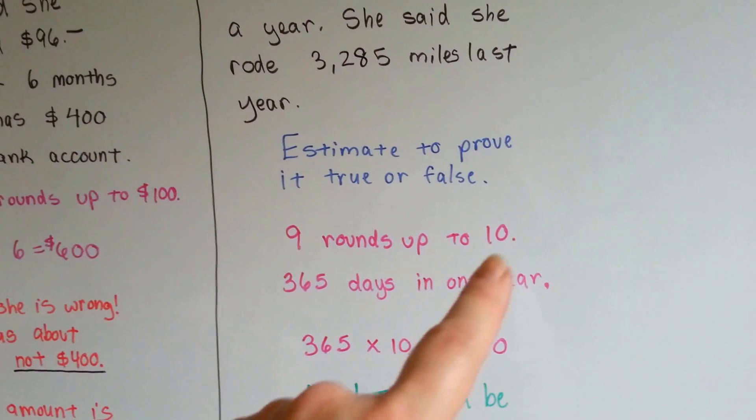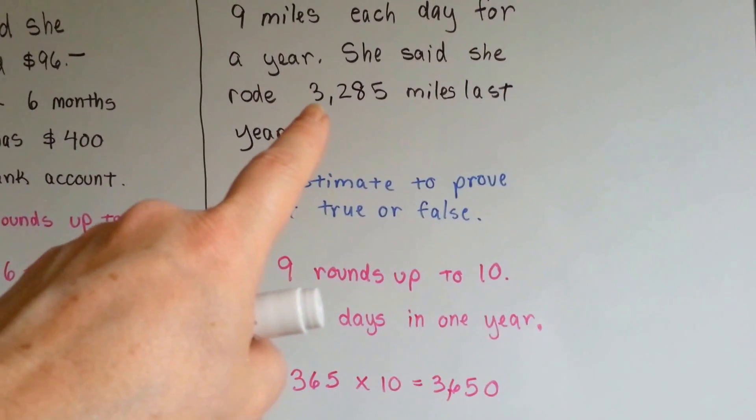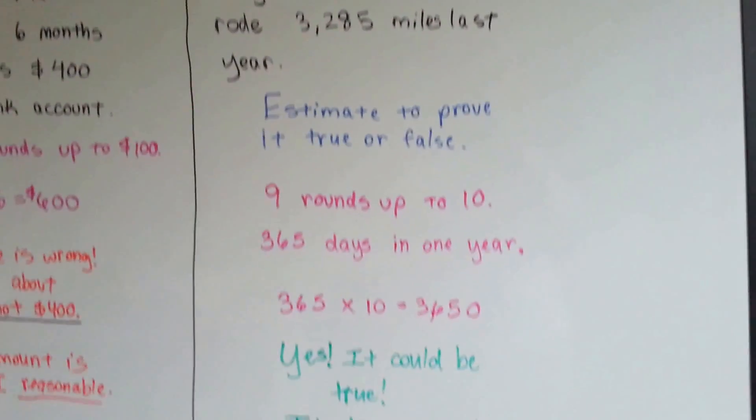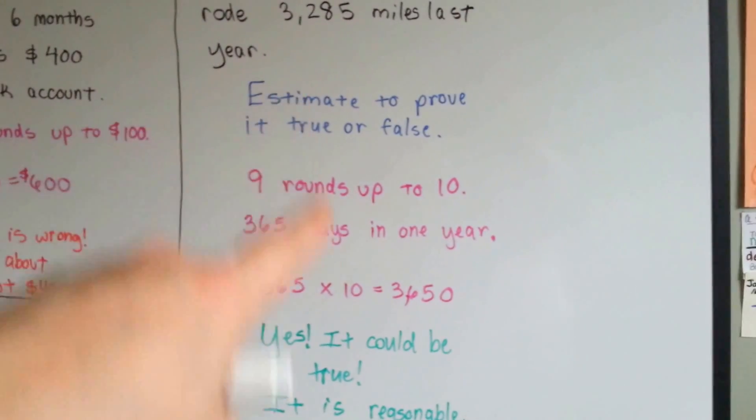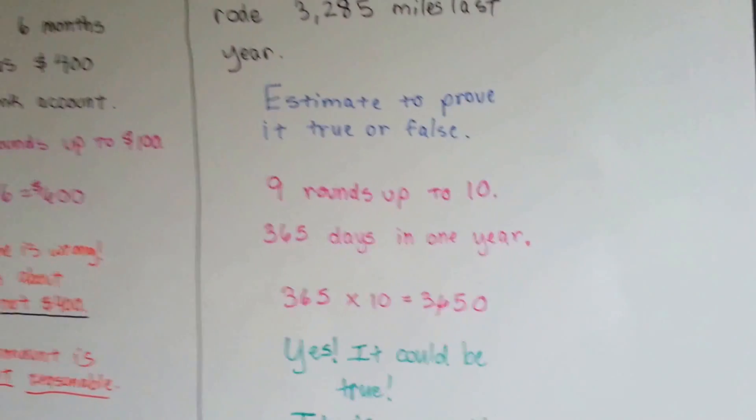Well, we rounded up and added to it and got 3,650. So could she have ridden 3,285? Yes. It could be true. It sounds reasonable. She rode over 3,000 miles. So, yes. That's reasonable.